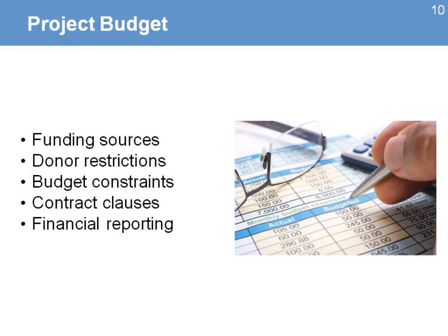On the area of the project budget, you can present information about the funding sources, donor restrictions on how the funding will be used, constraints about the budget, important clauses of the contract, and the process for financial reporting. You can even include people or representatives from the finance unit to help you in the presentation.